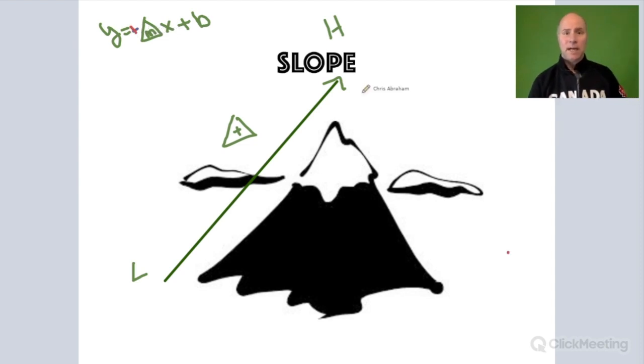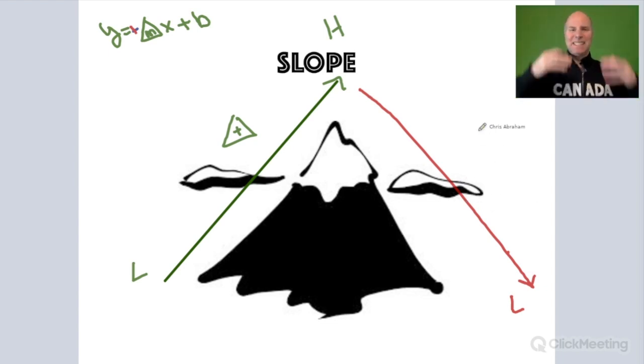At the same time, if we ever have a line that's going from high to low, I'll put down low here. So as we read from left to right, it's starting up high and going down. Well it's got a negative slope. We're descending the mountain, we're skiing down the mountain.